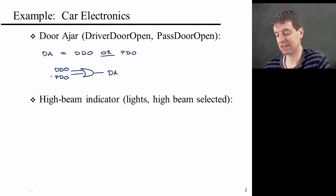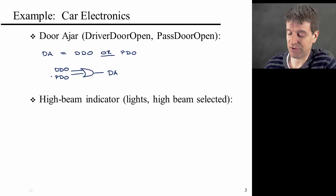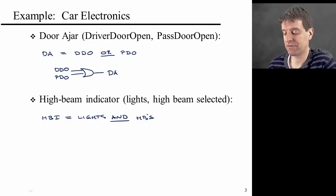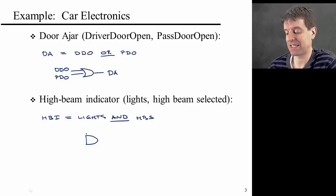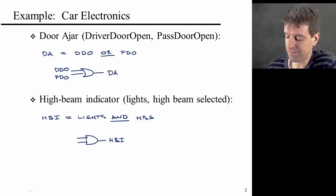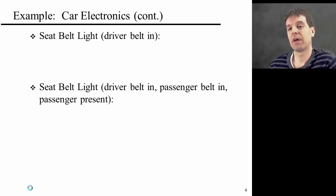Good. So in the second example, we have high beam indicator, which is a function of lights and high beam selected. And of course, in this case, you would say that the high beam indicator should be on if the lights are on and the high beam is selected. So you might write HBI is equal to lights and HBS. And again, the graphical notation for that would be an AND gate. Notice here the flat back compared to the OR, where the output is HBI, high beam indicator, is either true or false, or on or off, and your inputs are lights and high beam selected.